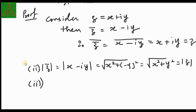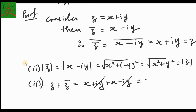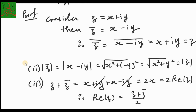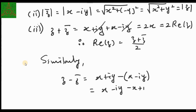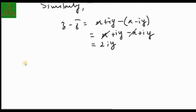For property 3, starting with z + z̄: we have (x + iy) + (x − iy) = 2x = 2·Re(z), so Re(z) = (z + z̄)/2. Similarly, z − z̄ = (x + iy) − (x − iy) = 2iy, so Im(z) = (z − z̄)/(2i).